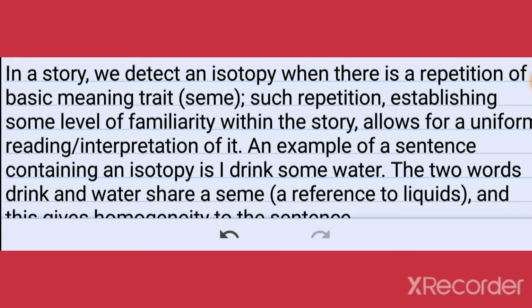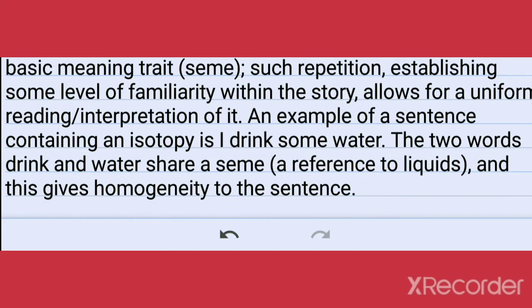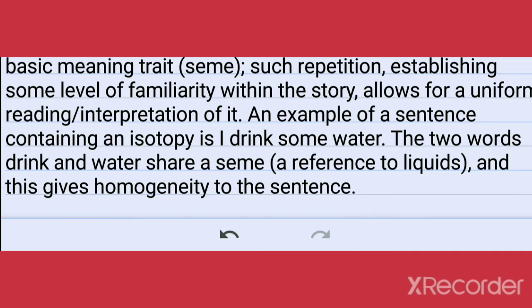The term coined by Algirdas J. Greimas is Isotopy. In a story we detect an isotopy when there is a repetition of a basic meaning unit. Such repetition, establishing some level of familiarity within the story, allows for uniform reading and interpretation of it. An example of a sentence containing an isotopy is 'I drink some water.' Both the words drink and water share the same reference to liquid, and this gives homogeneity to the sentence.